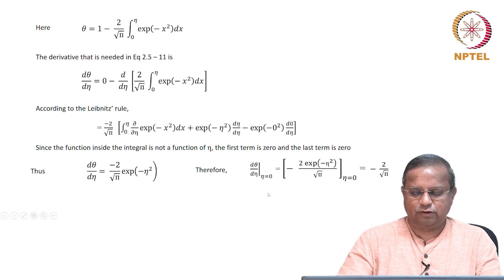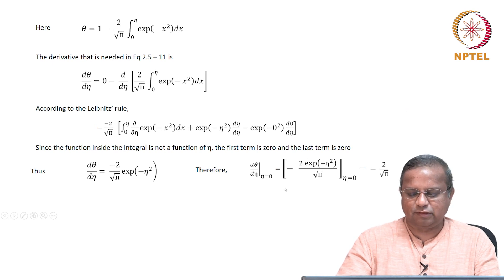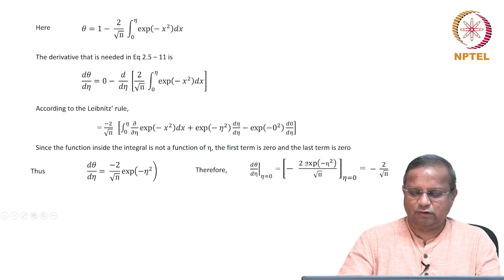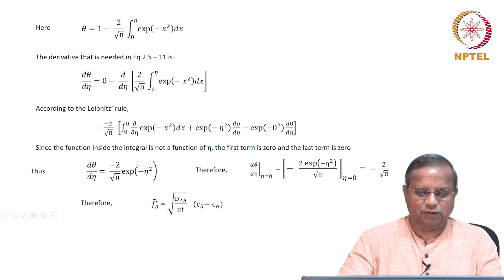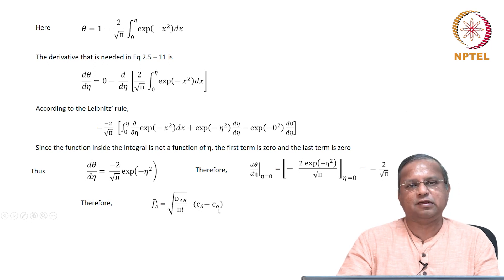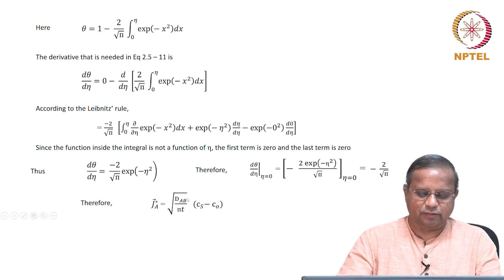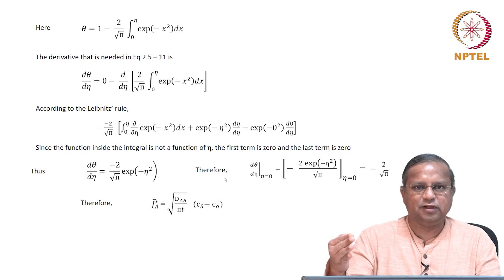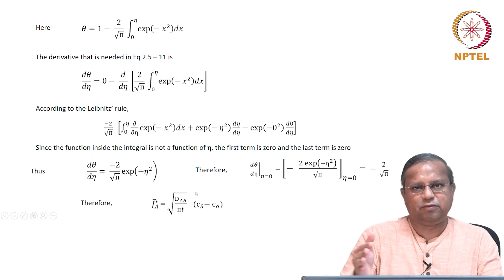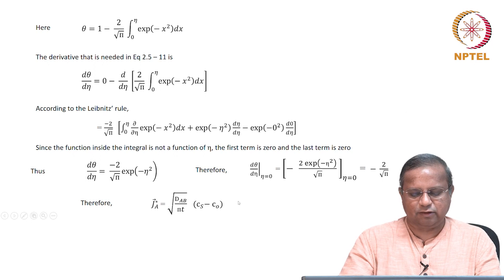Therefore, dθ/dη evaluated at η equals 0 equals minus 2/√π. Substituting this back into the expression for flux, the flux turns out to be √(D_AB / πt) times (cₛ − c₀), where D_AB is the same as Dᵢ. Note that D_AB, Dᵢ, and Dᵢ effective are used interchangeably in this course.